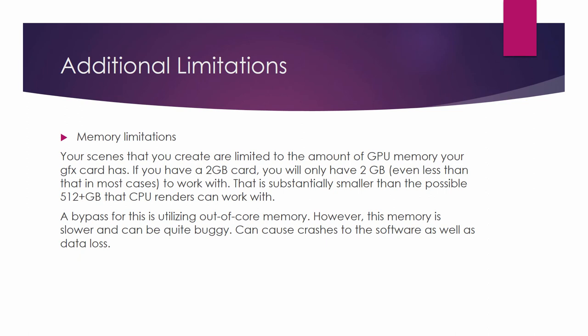Additional limitations include memory constraints. Your scenes are limited to the amount of GPU memory your graphics card has — if you have a 2GB card, you'll have 2GB or even less, since the GPU reserves some memory for other processes. That's substantially smaller than the possible 512-plus gigabytes that CPU renderers can work with when you install a lot of RAM. A bypass for this is utilizing out-of-core memory, which is an option in Octane. However, this memory is slower and can be quite buggy, and can cause crashes as well as loss of unsaved scene data.